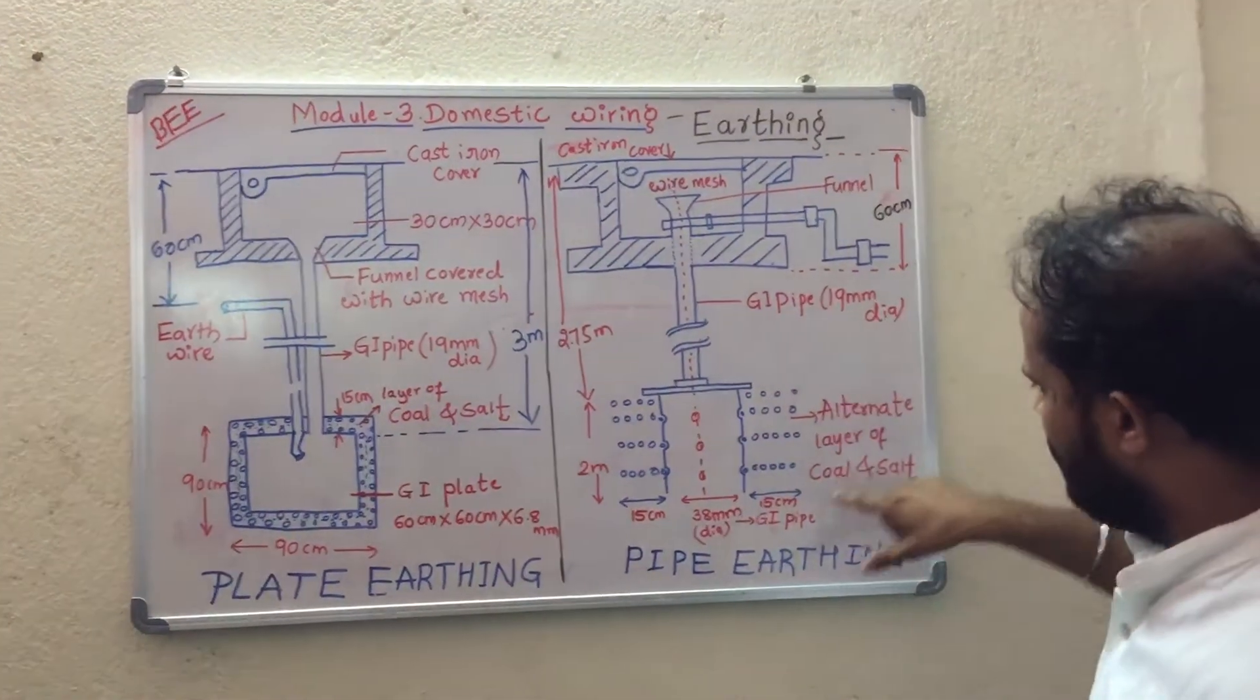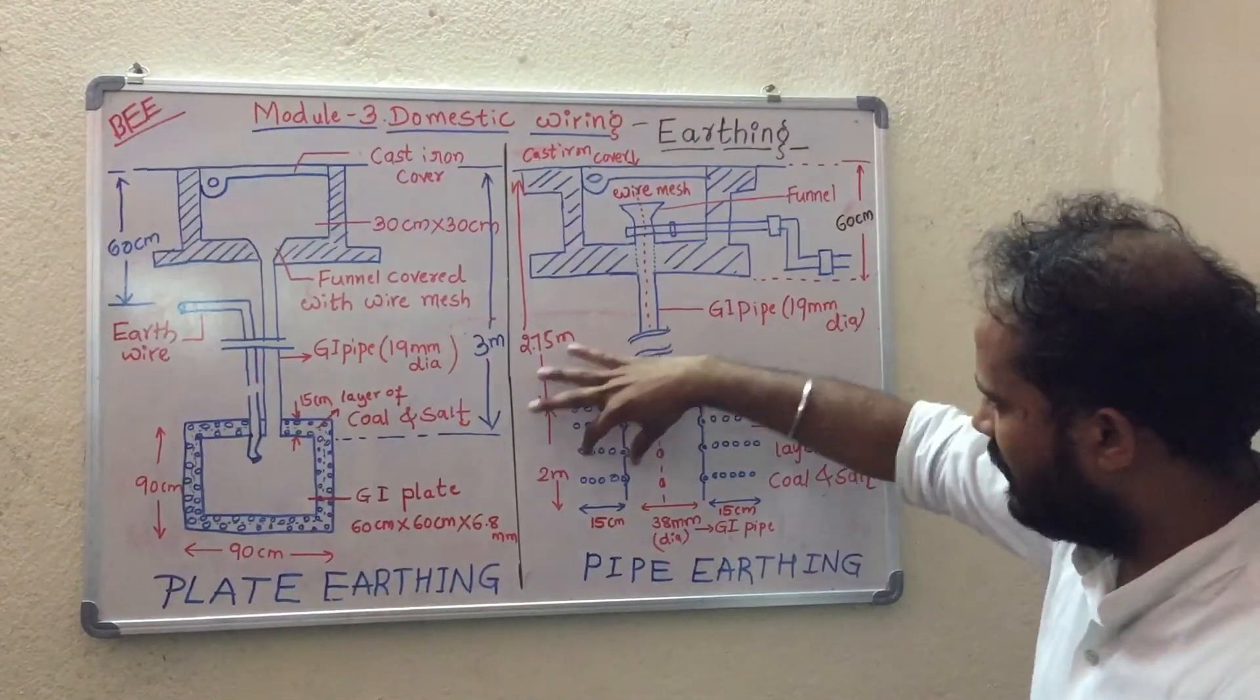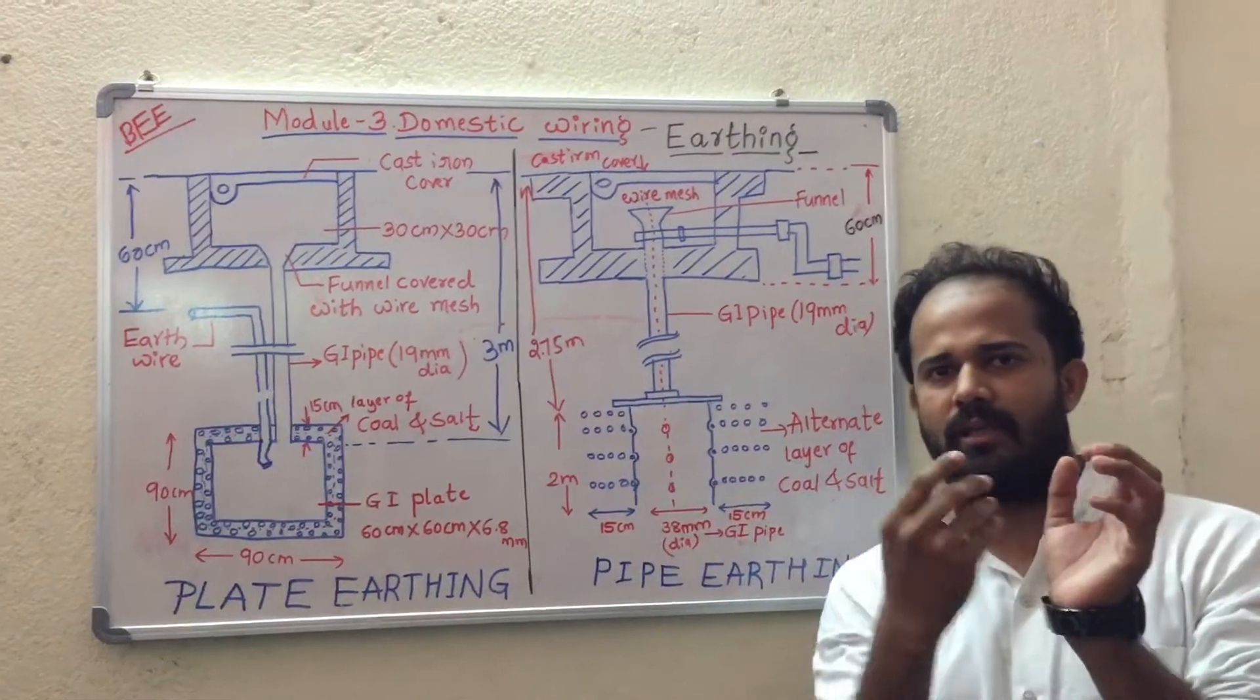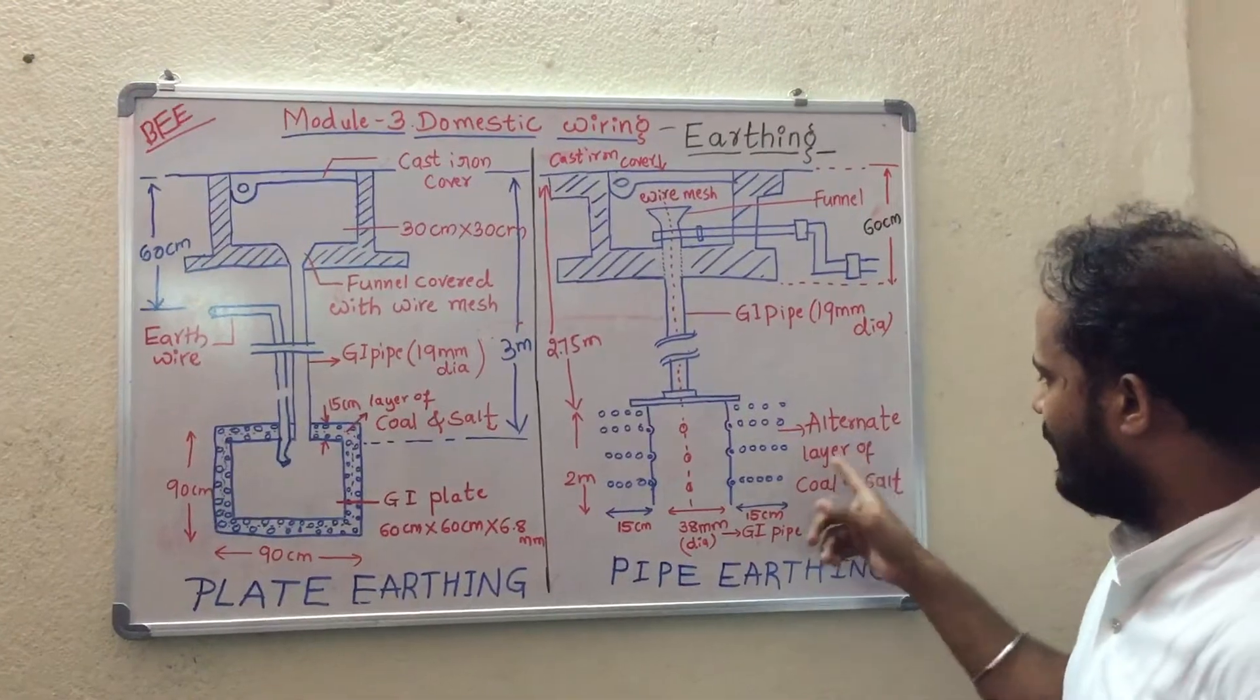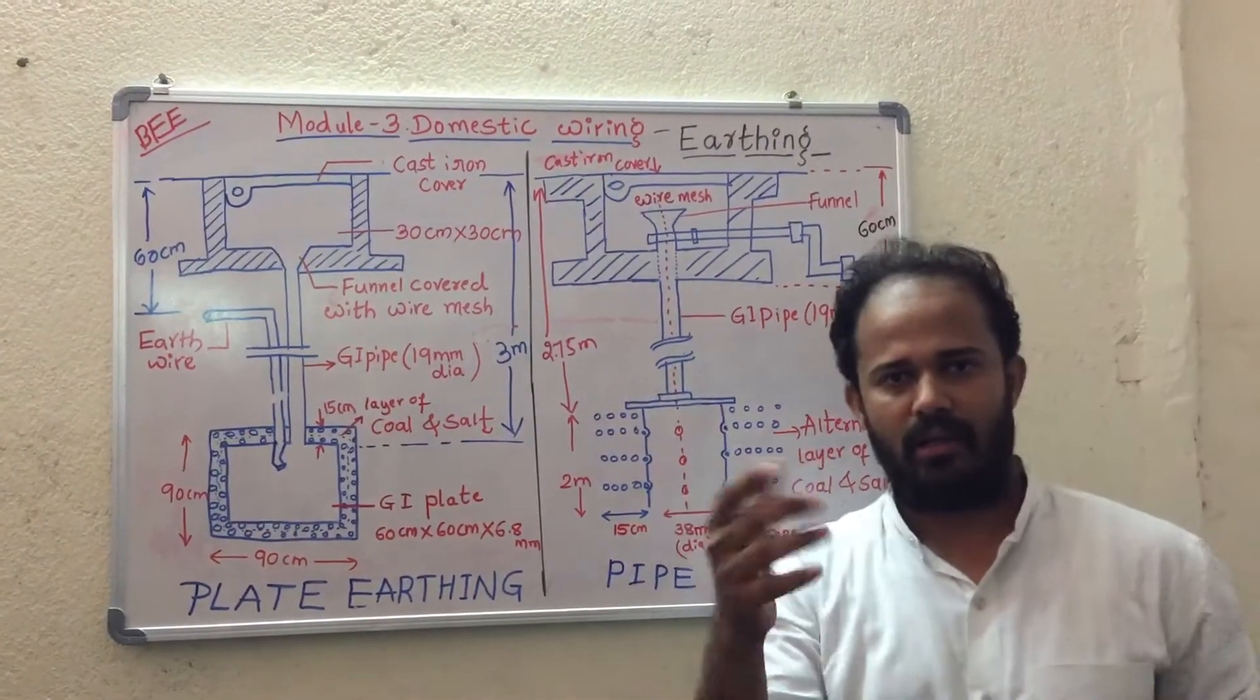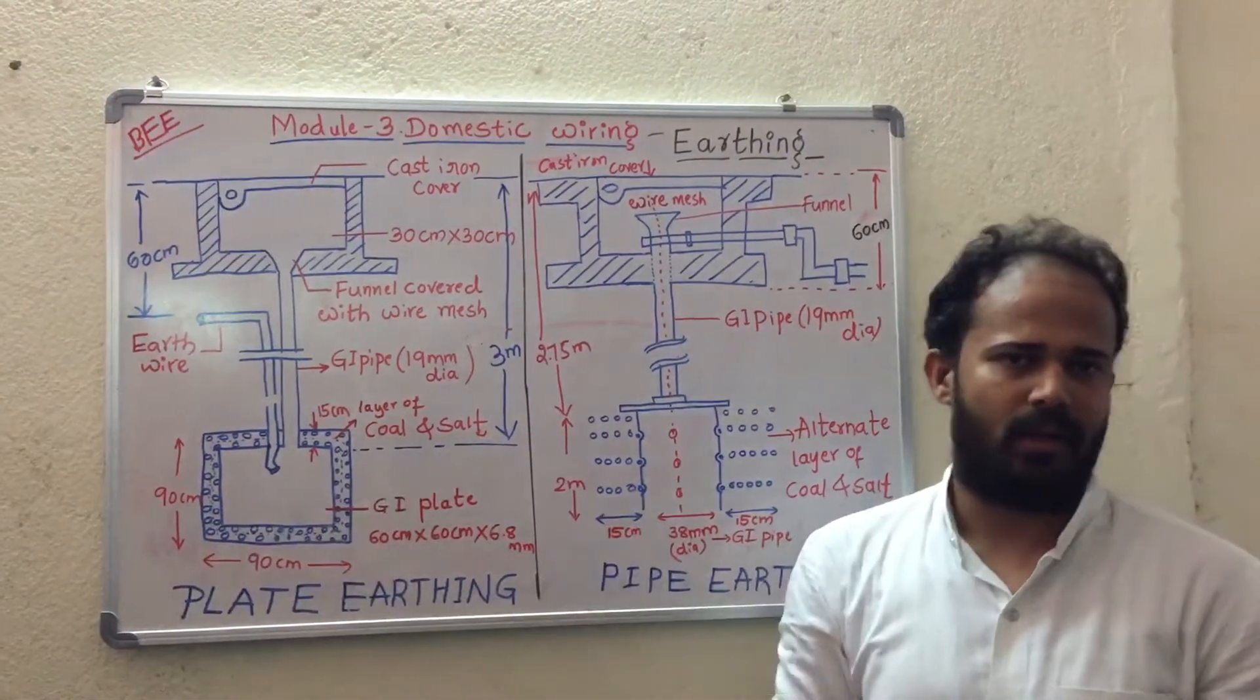Here you can see a thickness of 15 centimeter to cover this particular pipe, with alternate layers of coal and salt added for proper earthing.